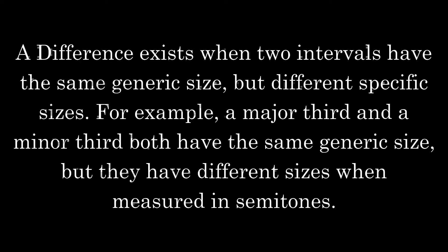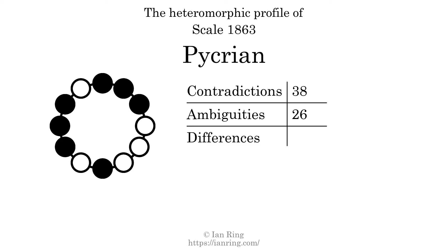A difference exists when two intervals have the same generic size but different specific sizes — for example, a major third and a minor third both have the same generic size, but they have different sizes when measured in semitones. The number of differences in this scale is 90.